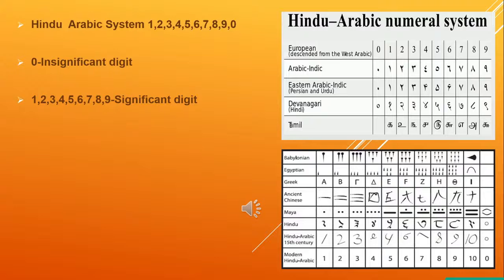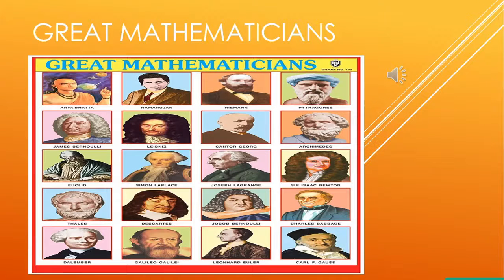The most widely used number system is the Hindu-Arabic number system, which is a combination of 10 digits or symbols. There are famous mathematicians throughout the world who have contributed immensely to the growth of mathematics by inventing new concepts, which has helped humanity progress. For example, the concept of zero was invented by Indian mathematician Aryabhatta.